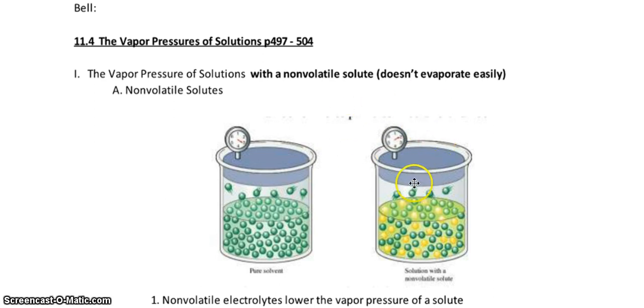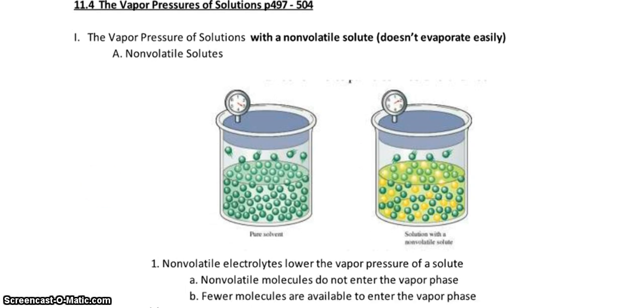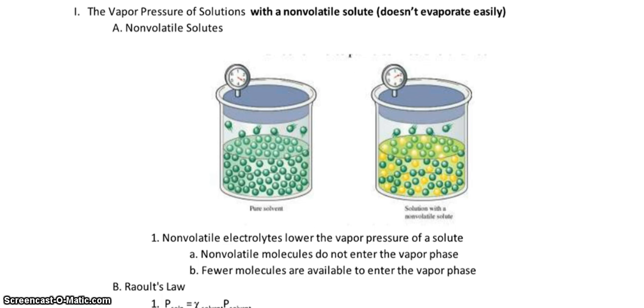The pressure went down because I have fewer molecules colliding against the walls and whatnot, so I have a lower vapor pressure. So what does this tell me that these non-volatile electrolytes lower the vapor pressure of the solute? Well, first of all, the non-volatile molecules, the salt, the sugars, do not enter the vapor pressure.